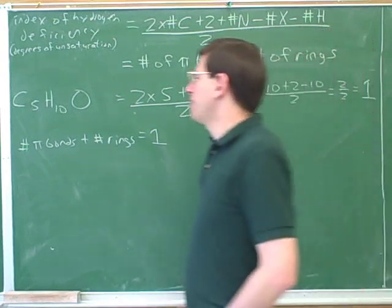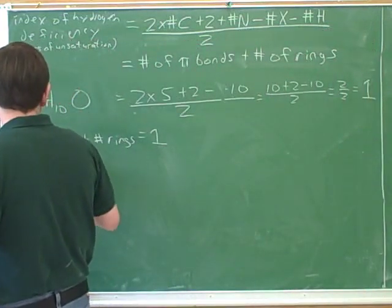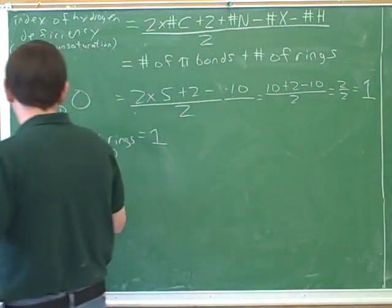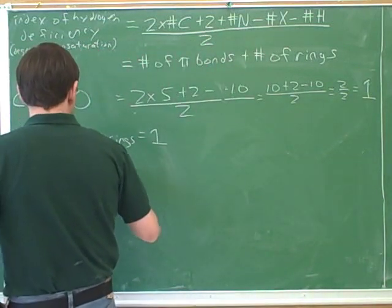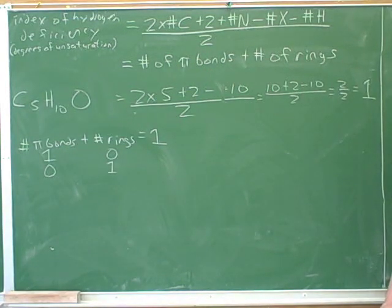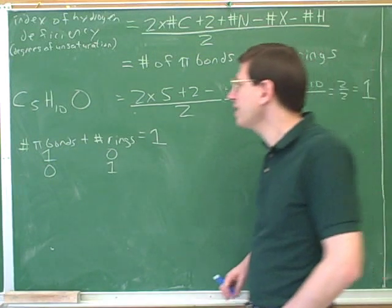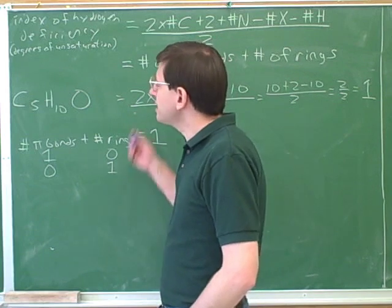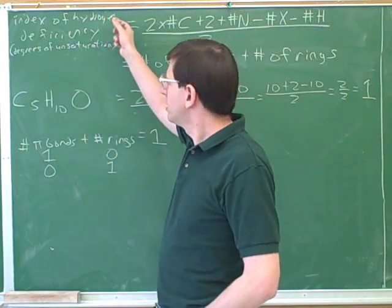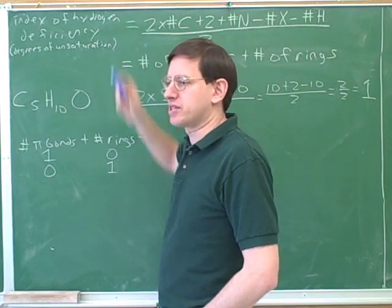What does that mean? That means that the molecule might have one pi bond and no rings, or it might possibly have no pi bonds and one ring. Based on the degrees of unsaturation, we can't be any more specific yet. We know there's either one pi bond or one ring, but we can't have both. This is a very important habit. Any time, any problem where you're just given the molecular formula, you should start by using this degrees of unsaturation. That always gives us helpful information.